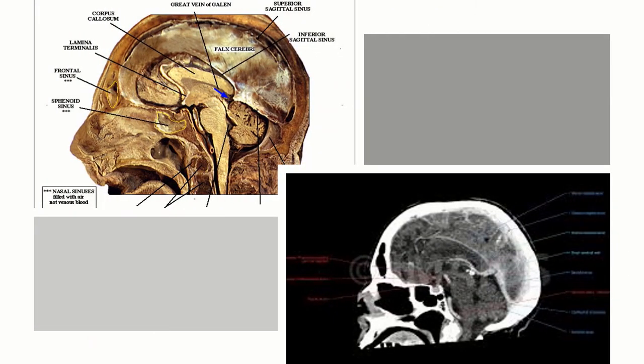Next is the sagittal section, taken along the sagittal or parasagittal axis. This divides the body into left and right halves.